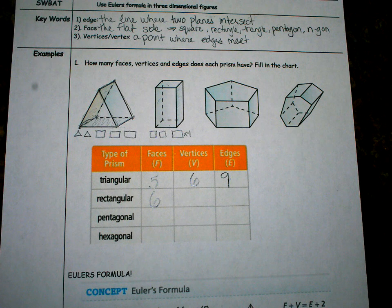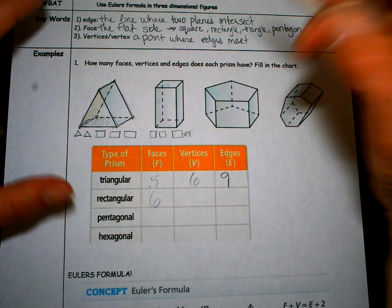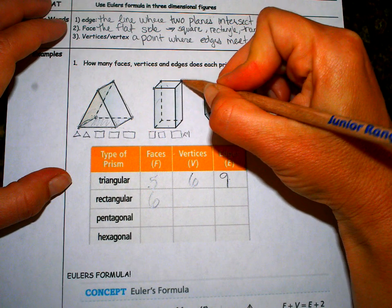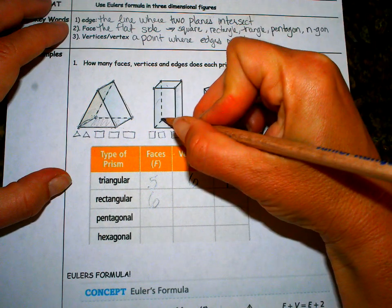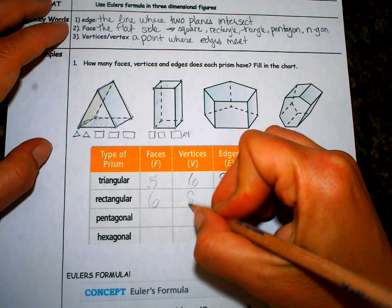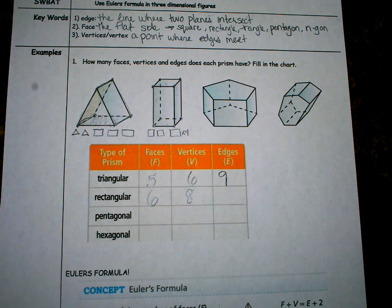A vertex, vertices. You just count them. One, two, three, four, five, six, seven, eight. Eight vertices.